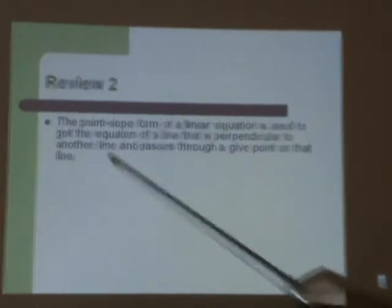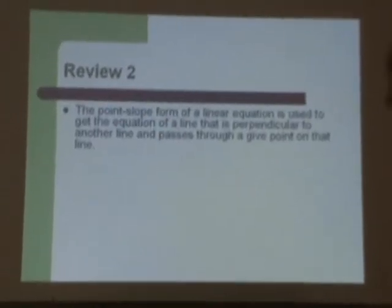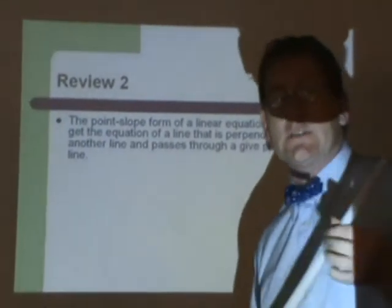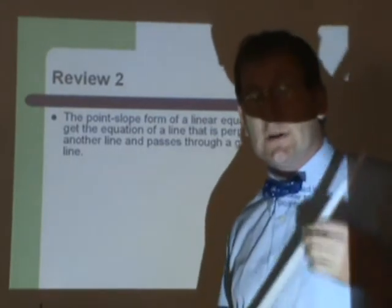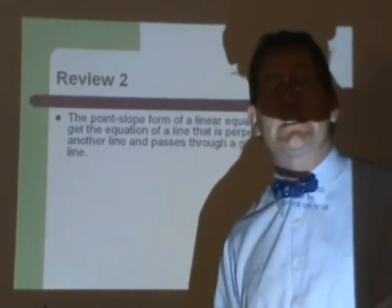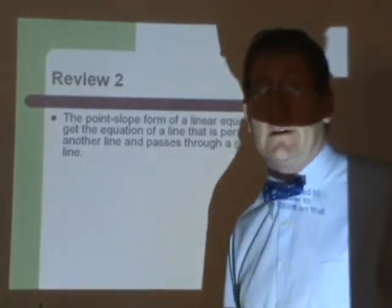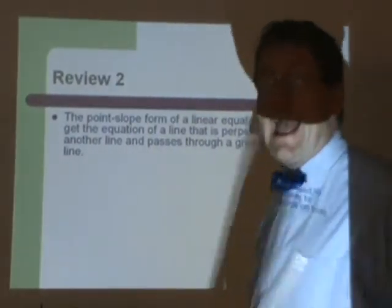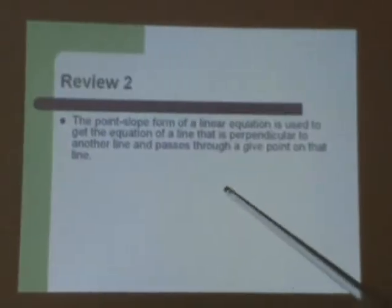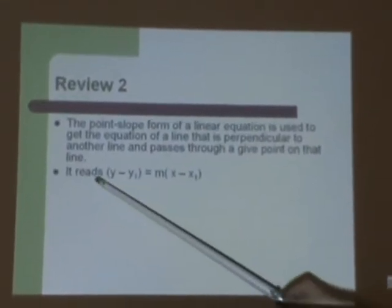What else did we learn? Well, there's a point slope form for linear equations. And we can use this point slope form to satisfy the standard. That is, we can use it to find a line that goes to a certain point and is perpendicular to that line at that point. It reads like this: y minus y1 equals m times in parentheses x minus x1.